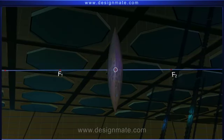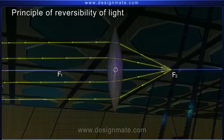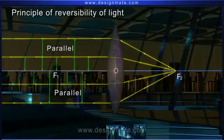According to the principle of reversibility of light, a ray of light passing through the focal point of the convex lens emerges on the other side of the lens parallel to its principal axis.